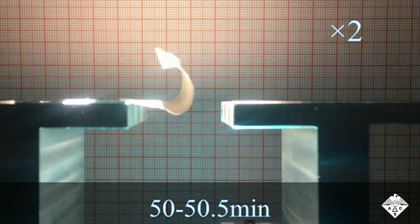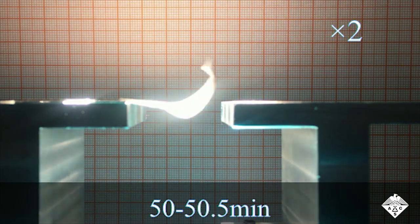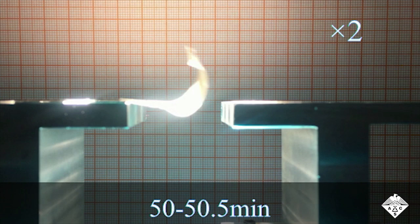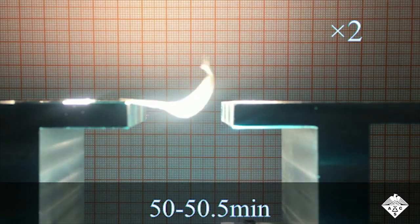Then, the curved part of the wing shaded itself, causing the temperature to drop and the strip to unfold. Continuous cycles of bending and unfolding produced a flapping motion.